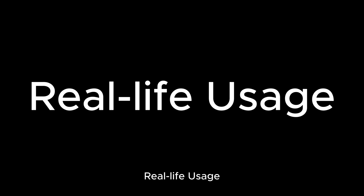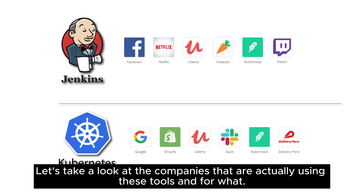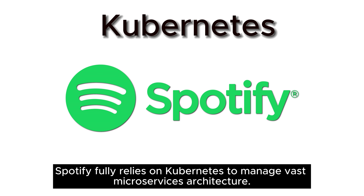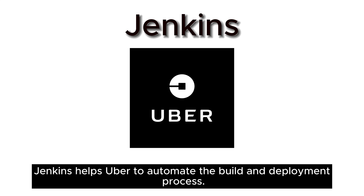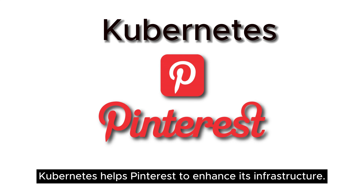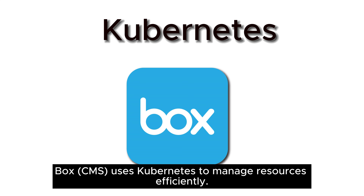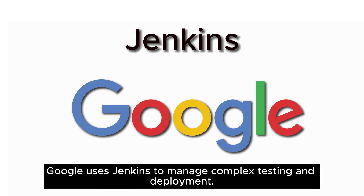Real-life usage — let's take a look at the companies actually using these tools. Netflix and LinkedIn heavily rely on them for the CI/CD pipeline. Spotify fully relies on them to manage vast microservices architecture. It helps Uber automate the build and deployment process, and helps Pinterest enhance its infrastructure. Adobe depends on them for continuous delivery and deployment, and Vox uses them to manage resources efficiently. Google uses Jenkins to manage complex testing and deployment.